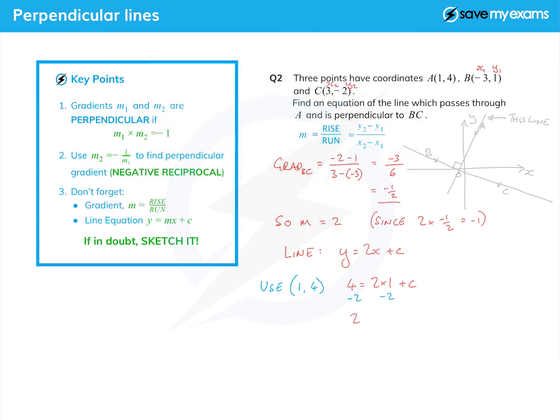That gives me 2 equals c. So the equation of the line finally is y equals 2x plus 2 and that's quite neat in that form so we don't need to change it any further. So there you go, perpendicular lines have gradients that multiply together to give minus one.